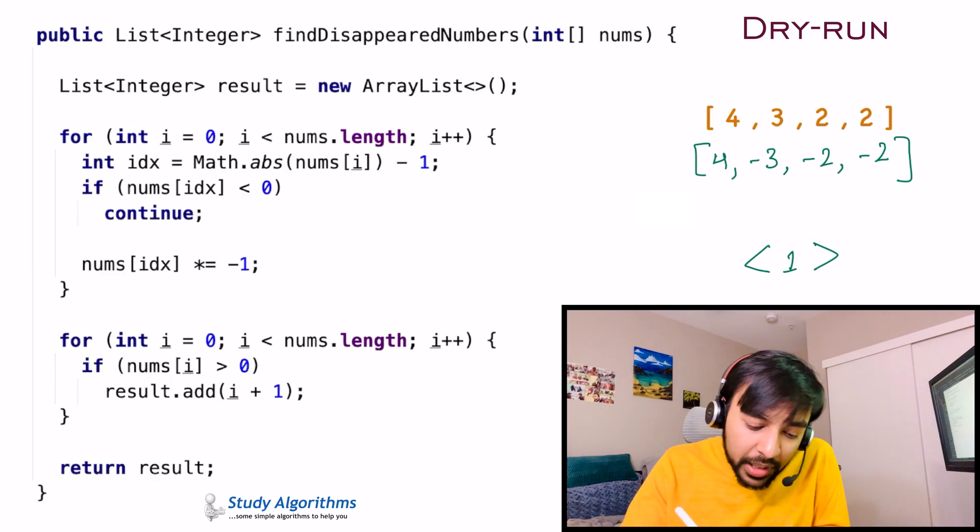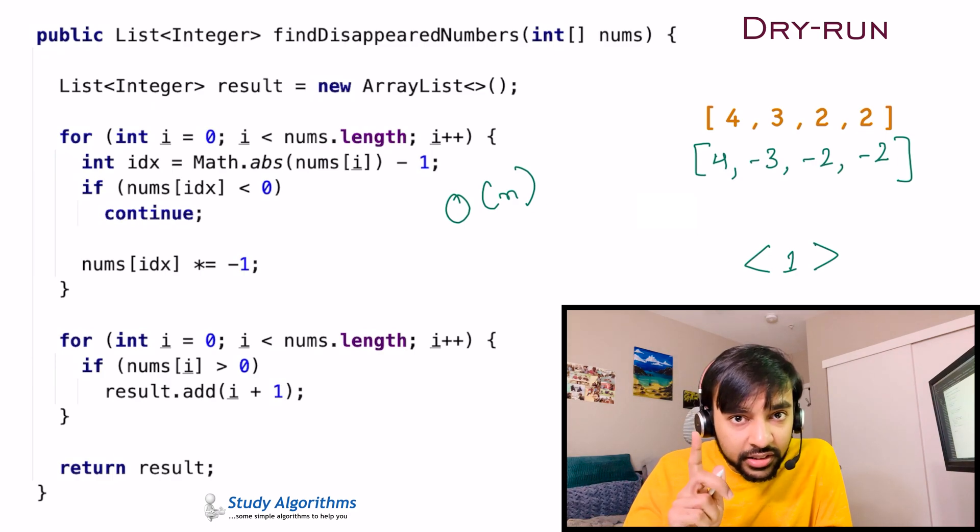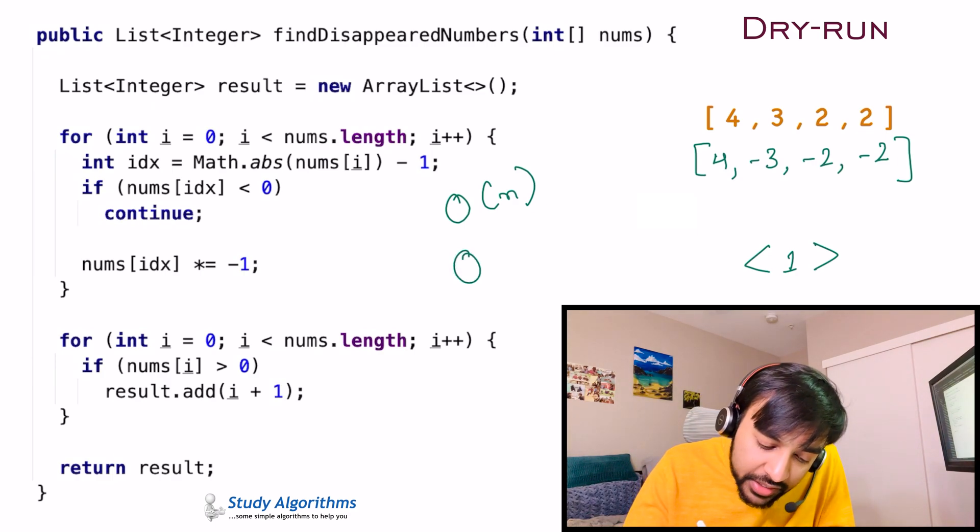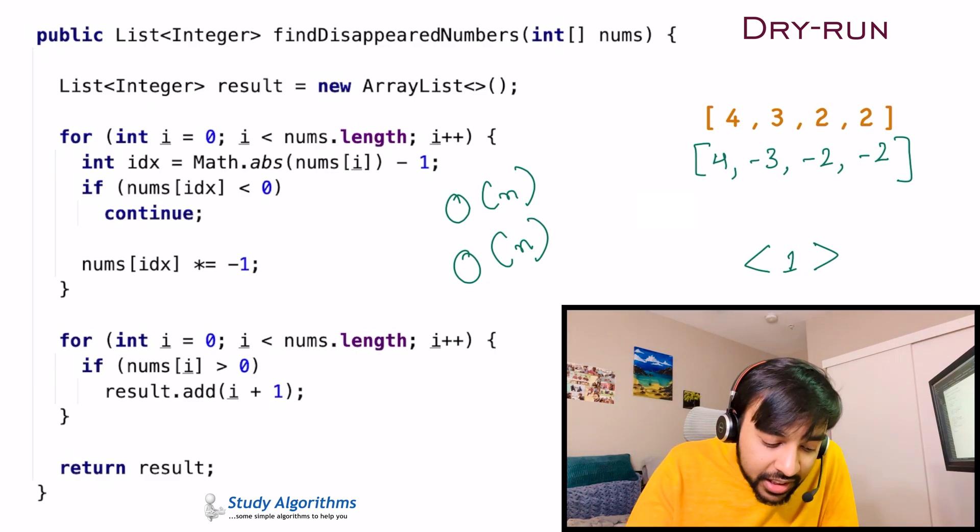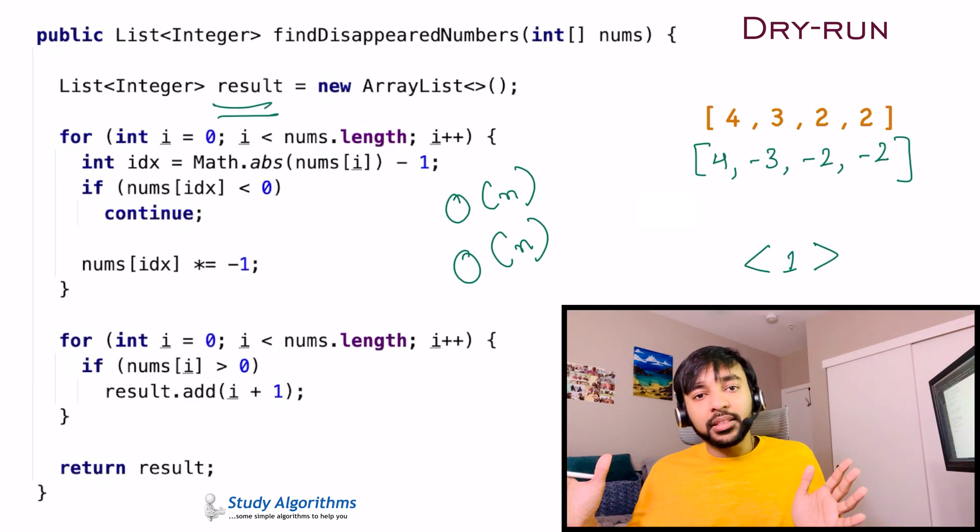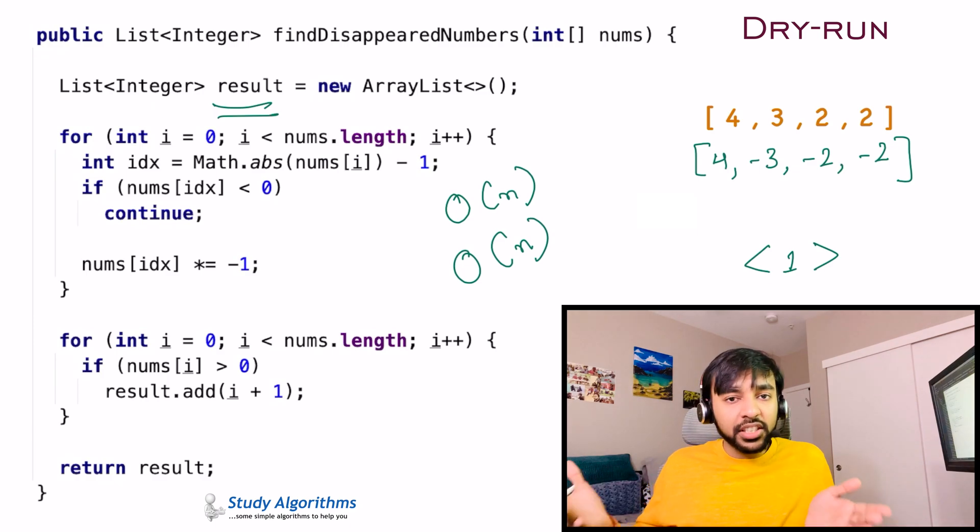The time complexity of this solution is order of n. That is because you are iterating through the array only once. And the space complexity of this solution is also order of n. Because this result set could have all the numbers that are disappeared. You could have an array that only has ones up till 10,000 times. So all the numbers are disappeared.